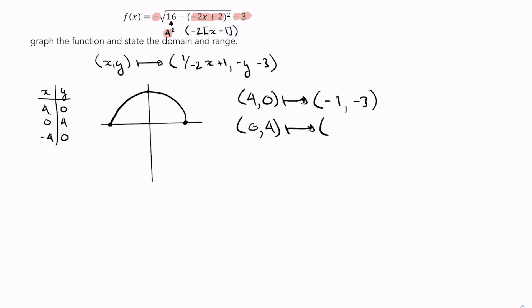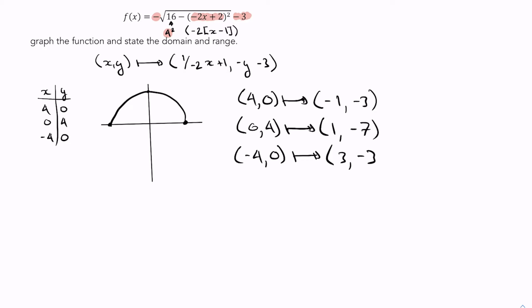going to go to the point (1, -7), and (-4, 0) is going to go to the point (3, -3). So what does this look like in our graph?